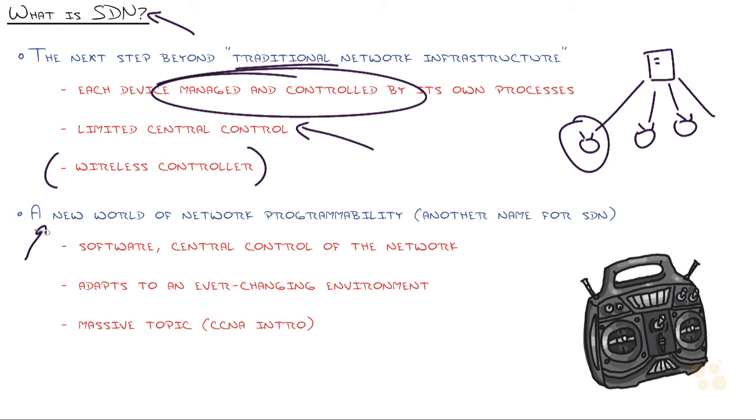Now you start to see the new world of SDN. Some people call SDN network programmability, which allows you to have software controllers that deploy, manage, and monitor all the network devices, not just the wireless access points, but your switches and your routers, and can adapt to an ever-changing environment. Like right now, I'm at the end of 2016.